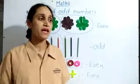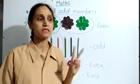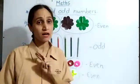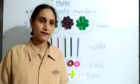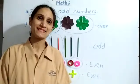So whenever we are going to group the objects into 2, this is called even. And when we cannot group them into a group of 2, it is called odd. Let's see this concept with the help of some examples. Thank you.